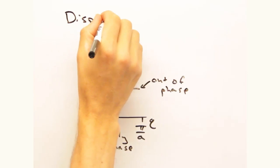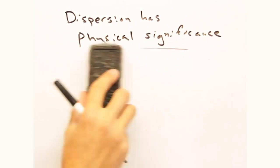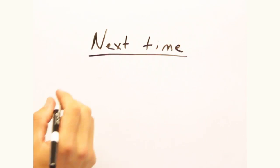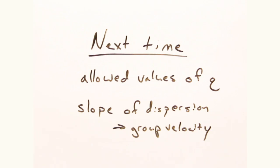Okay, we've gone through a forest of math today, but it's nice to see there's a physical significance to the dispersion relationship. Next time, we'll talk about allowed values of q and what the slope of our dispersion can tell us. Thanks for watching today's installment of Solid-State Physics in a Nutshell. See you next time.